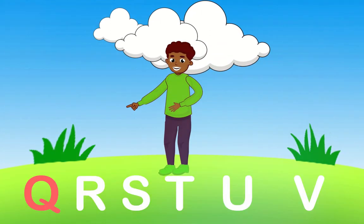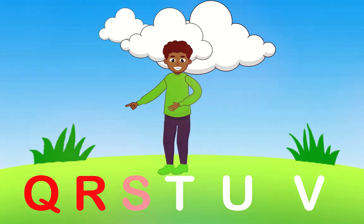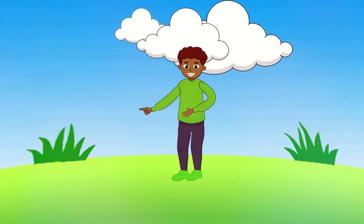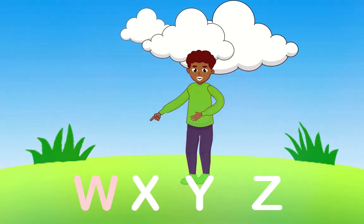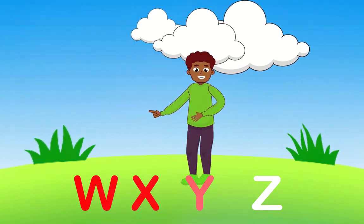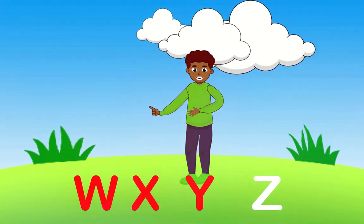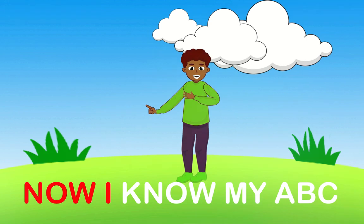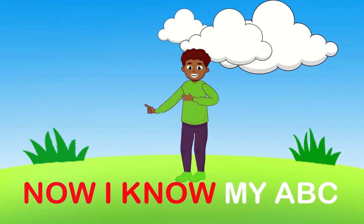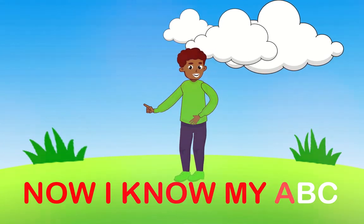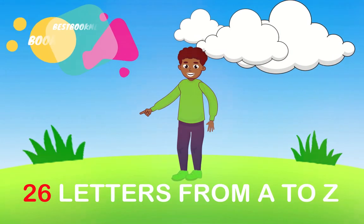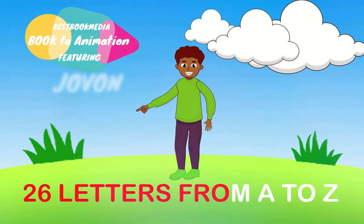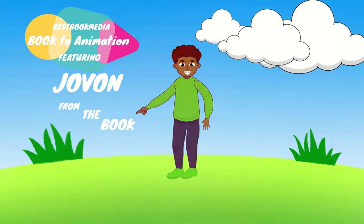P, Q, R, S, T, U, V, W, X, Y, and Z. Now I know my ABC's. 26 letters from A to Z.